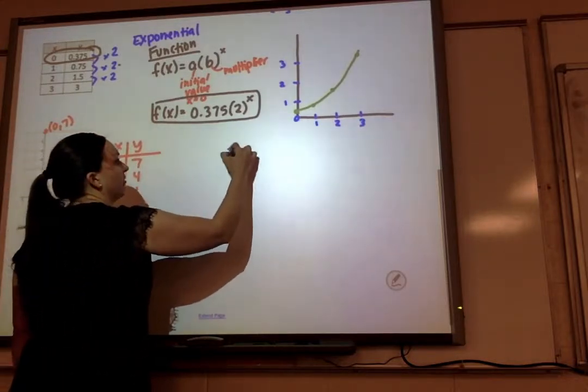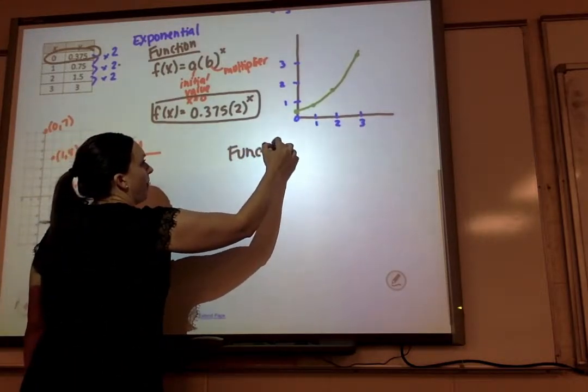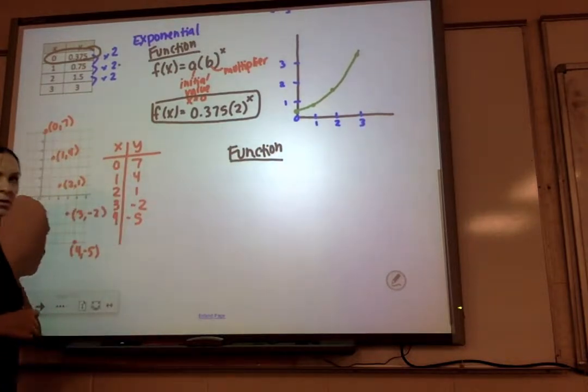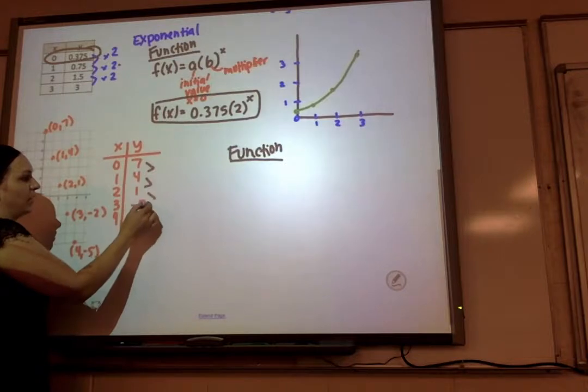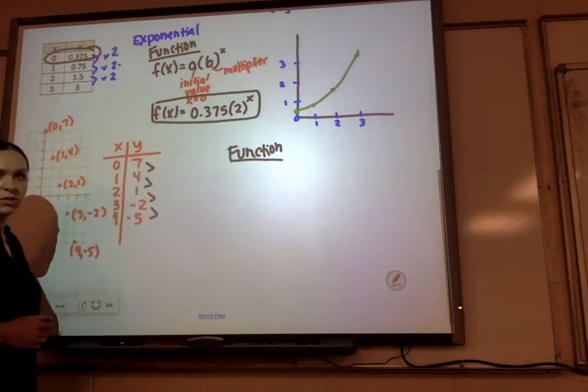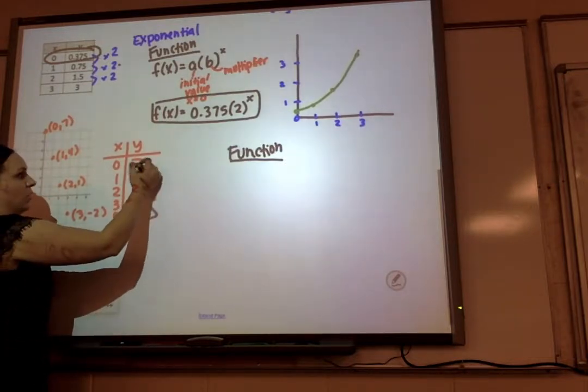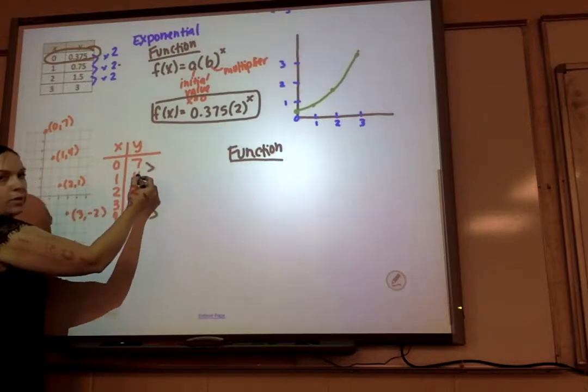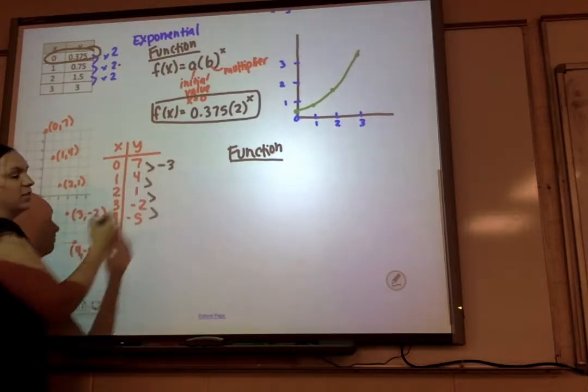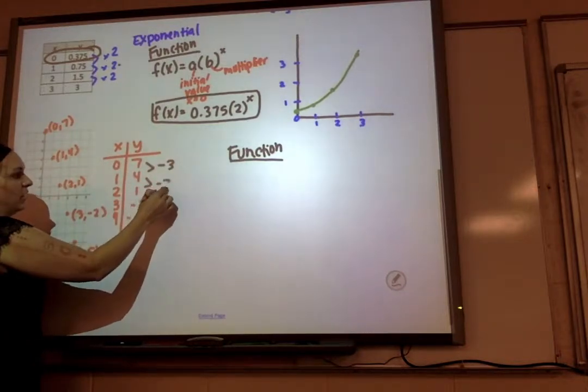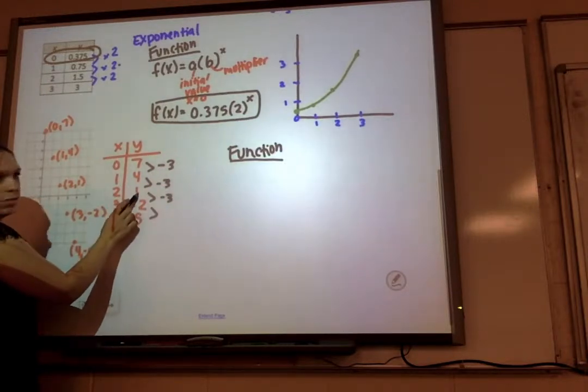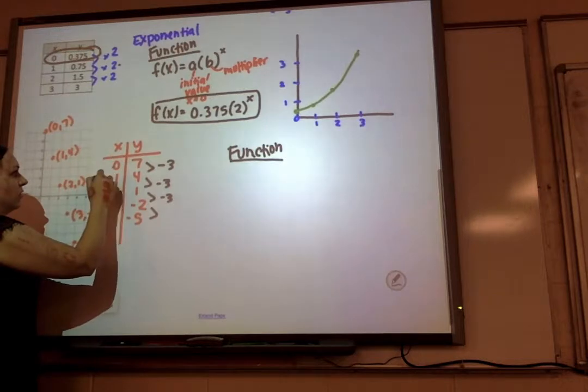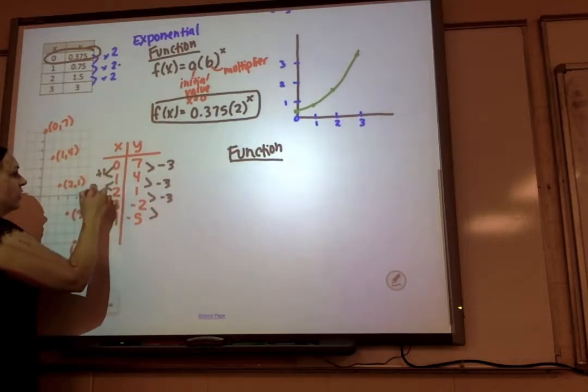I just need to write my function now. So to find my function, I've got to figure out what is happening between these numbers. So 7 minus what is 4? Minus 3. And if I keep going, I can see that works. 4 minus 3 is 1. 1 minus 3 is negative 2. And my difference over here is just 1.